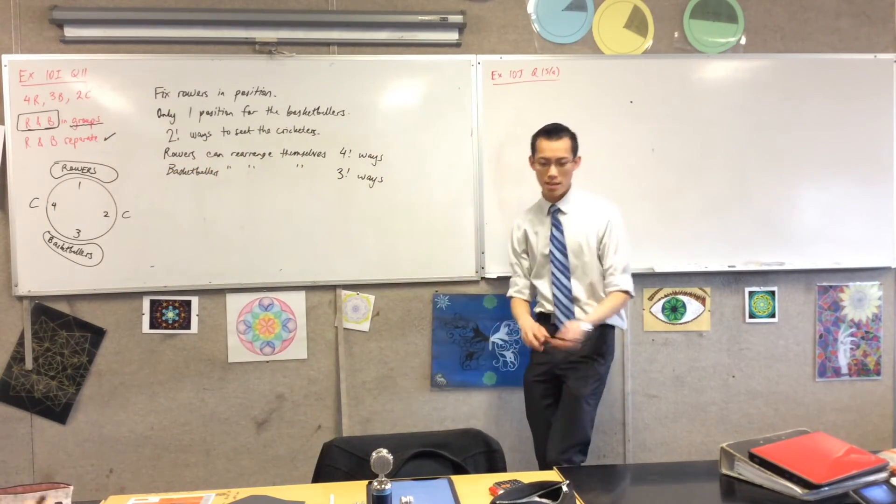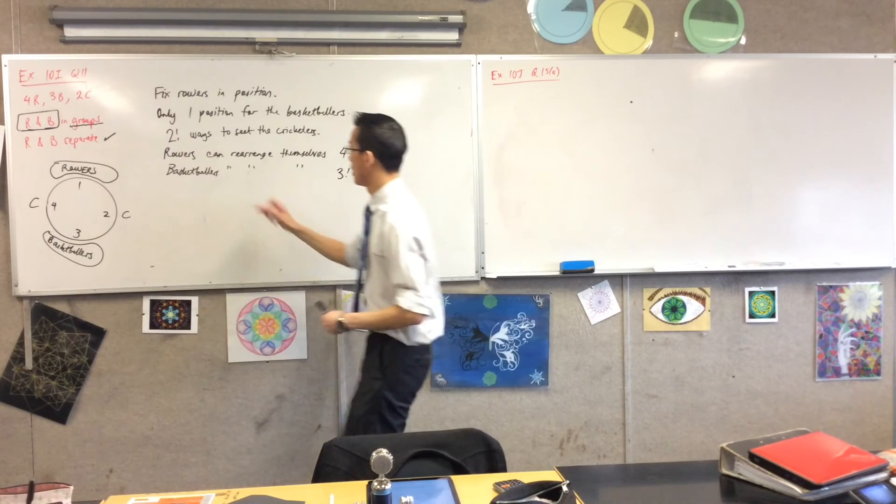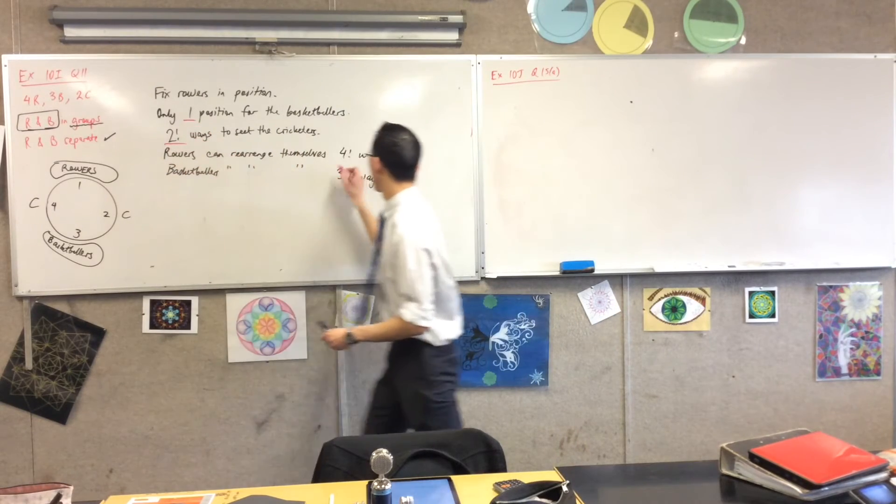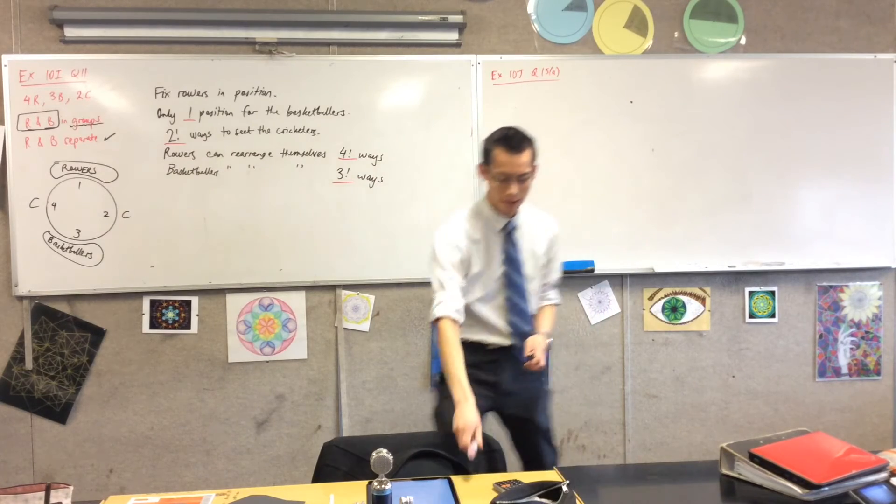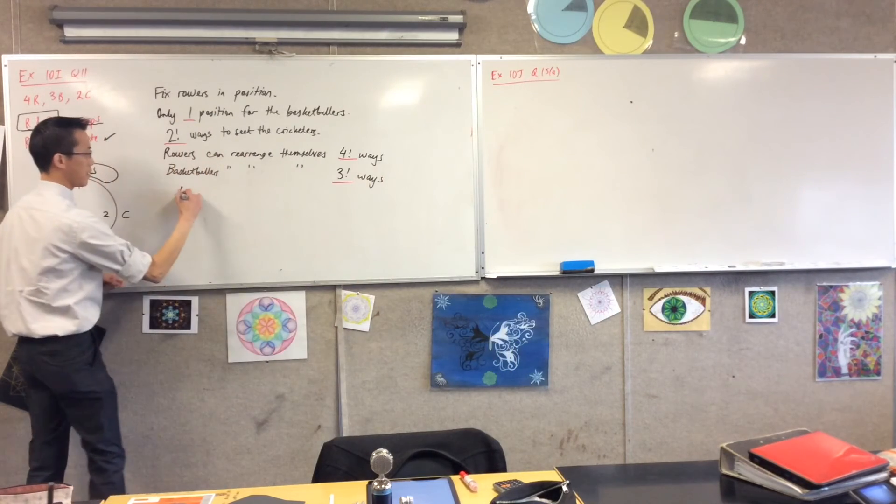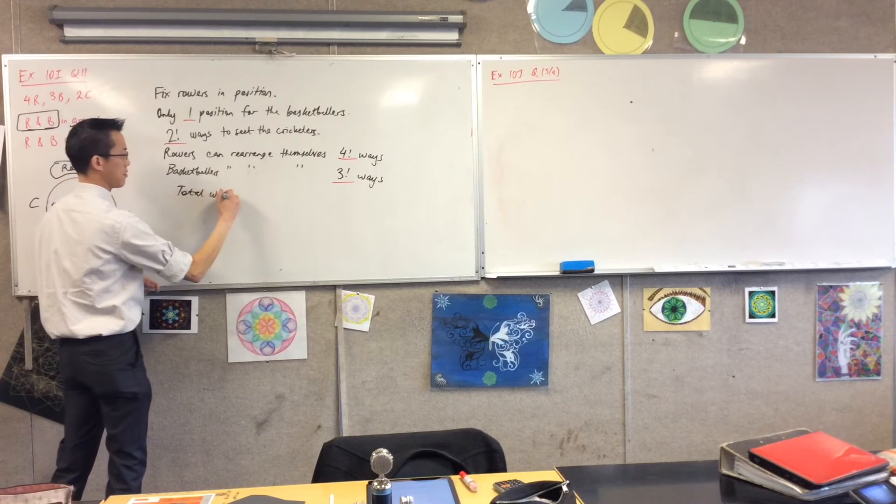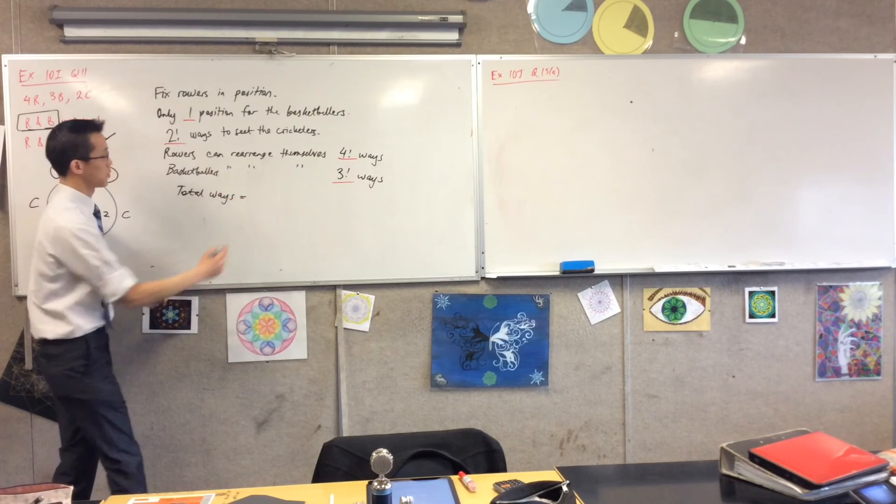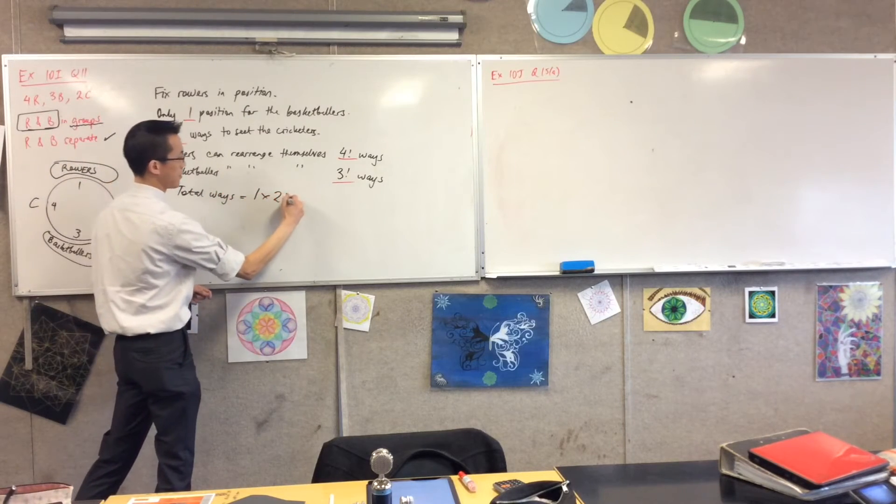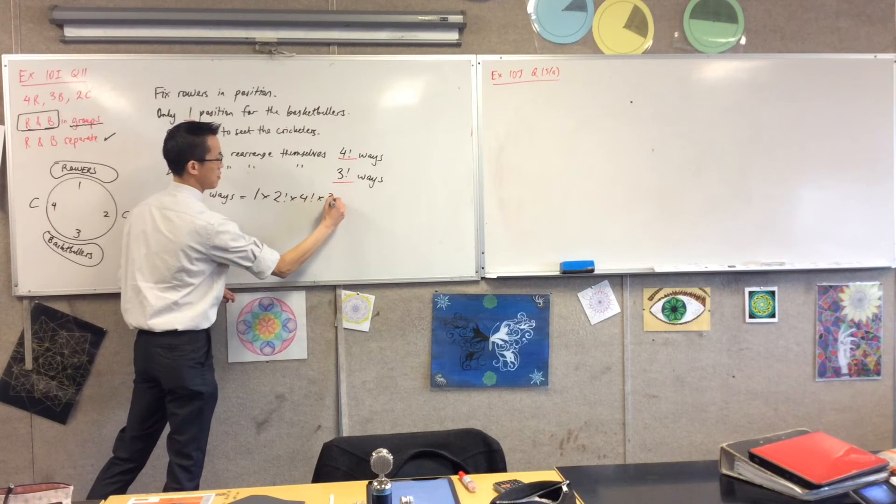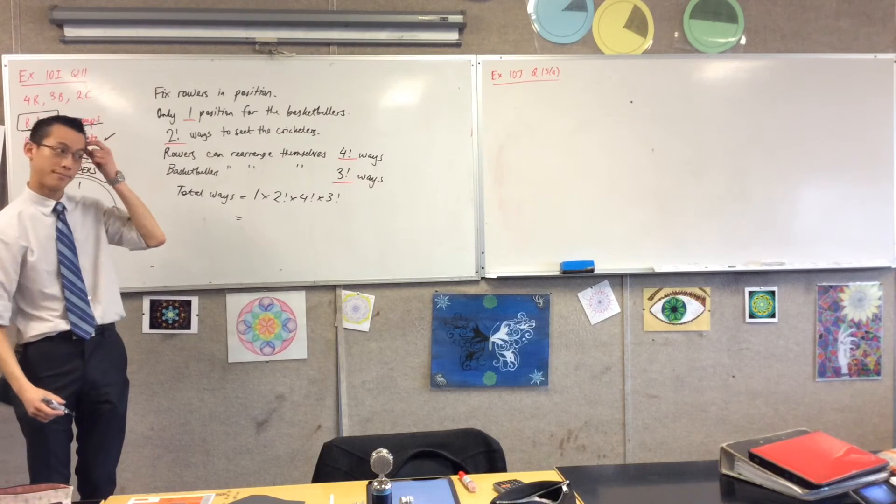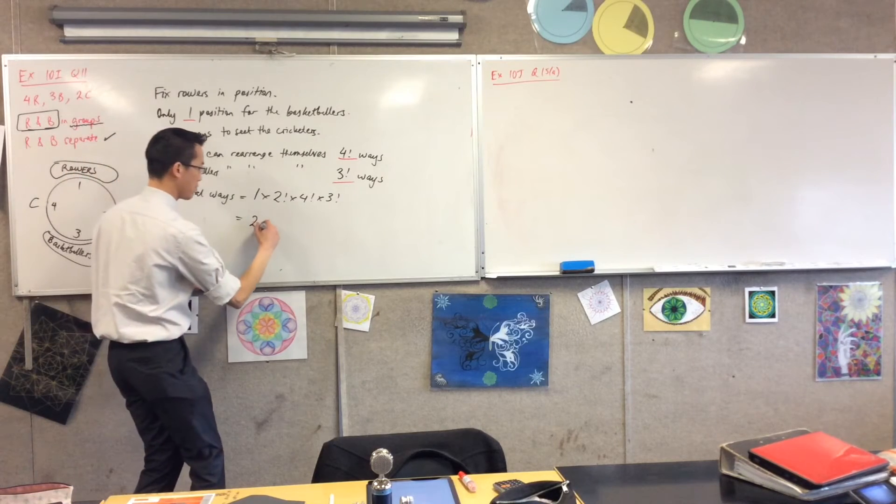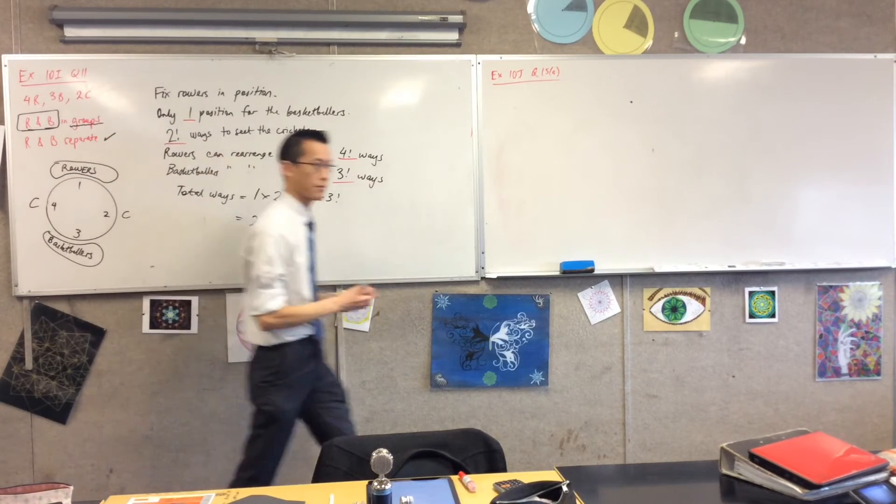So the lovely thing about this is you can see, and sometimes I even do this with another colour, one, two factorial, four factorial, three factorial. All the numbers I need are there. So now I'm going to say, total ways equals one, two factorial, four factorial, three factorial. Someone got a number for me? 288. Lovely.